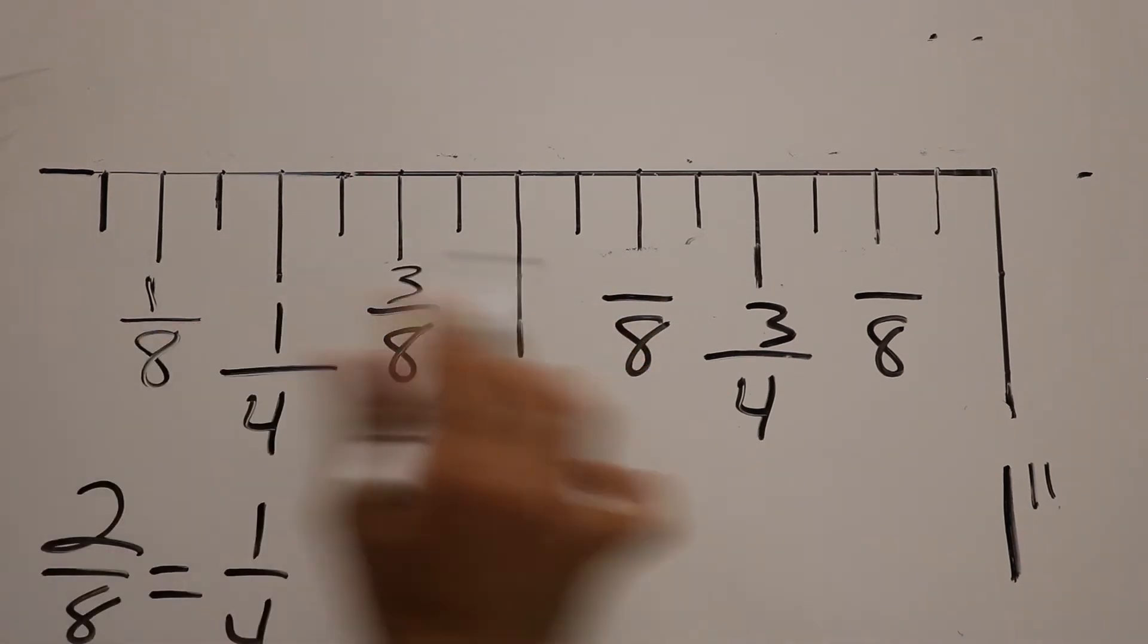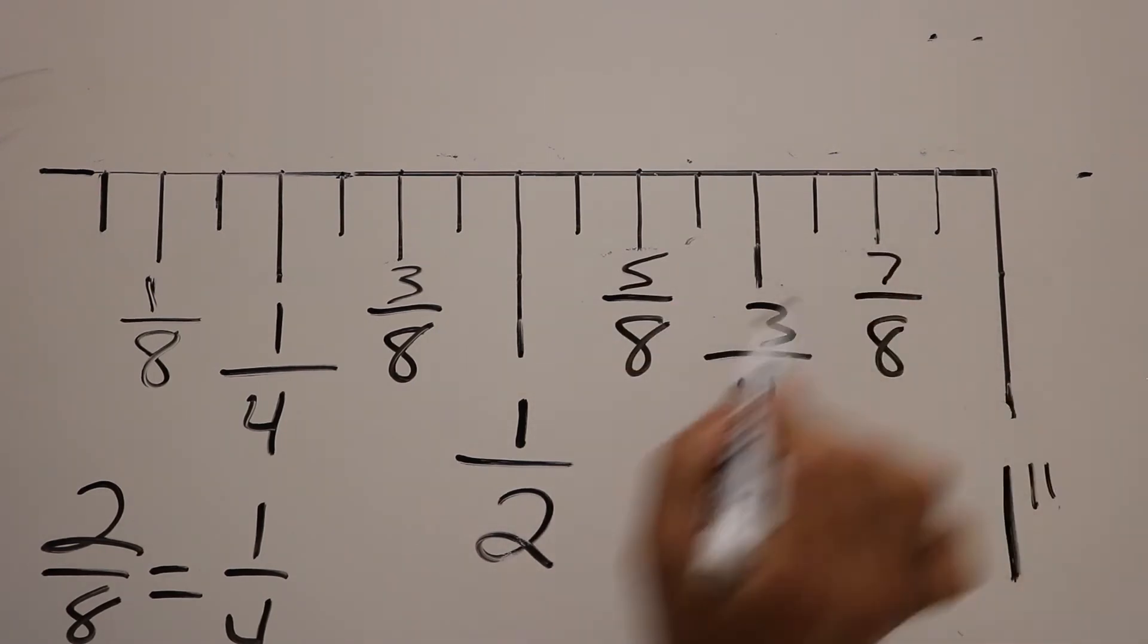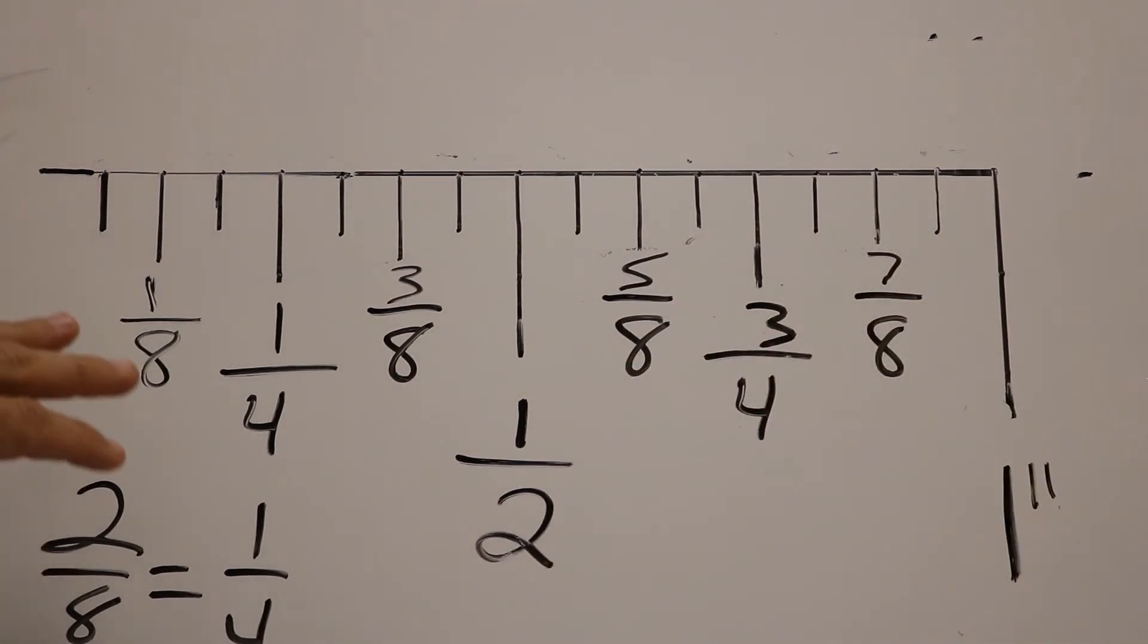I'll start counting all these in odds, three-eighths, five-eighths, and then seven-eighths. So as you can see, eight equal parts, one, three, five, seven.